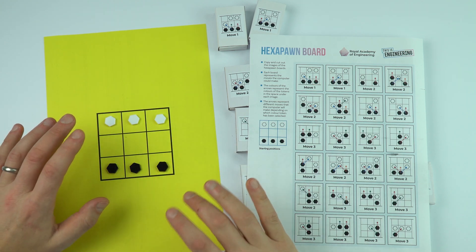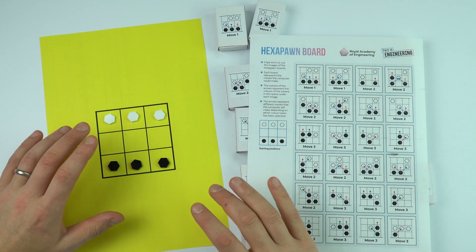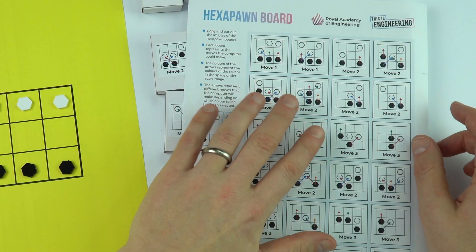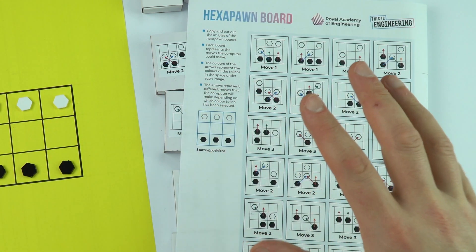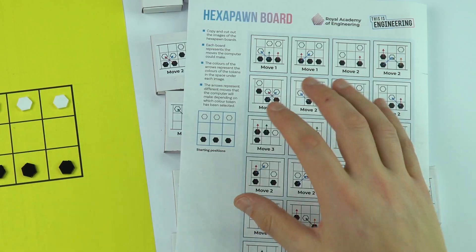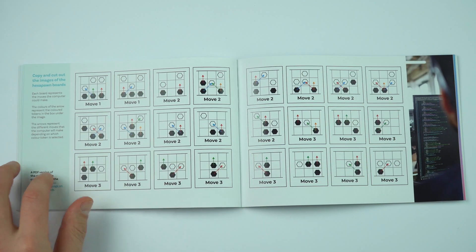It gets a little bit confusing in the guide, so what I'd do is just talk through the Hexa Pawn board, which you can print out. This is replicated inside the This Is Engineering Education Guide.